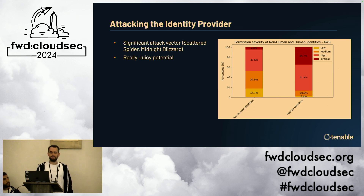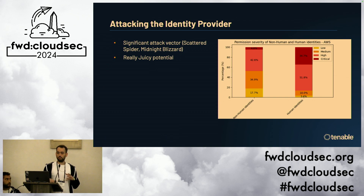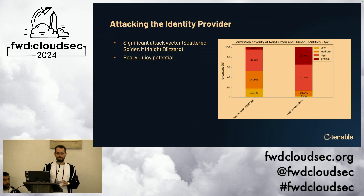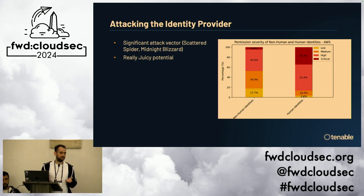One of the reasons the IDP is such an attractive target is that the potential is really juicy. We've done a lot of examination of data in cloud environments, and we see that while non-human identities are garnering a lot of attention, human identities are where it's really at from a privilege standpoint. More than a third of human identities are actually admin, and 85% are significantly privileged — which means significant business risk if compromised.